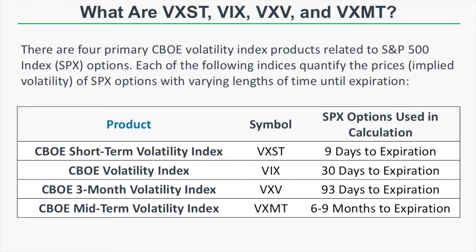The first one is VXST, which is the CBOE's short-term volatility index that quantifies SPX option prices with about nine days to expiration. The one you're probably most familiar with is the VIX, which quantifies SPX option prices with approximately 30 days to expiration. The lesser-known ones are VXV, the three-month volatility index, and VXMT, the mid-term volatility index. VXV quantifies three-month option prices using SPX options with around 93 days to expiration, while VXMT quantifies SPX option prices with approximately six to nine months to expiration.